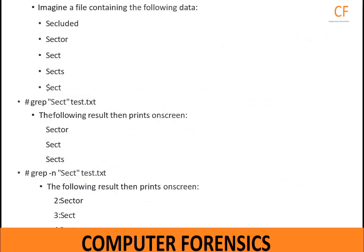Imagine a file containing the following data: sector, sect, sect, sects, isolation, etc. The following GREP expression searches each line for any word containing 'sect' in the file test.txt: grep sect test.txt. The following results then print on screen: sector, sect, sect, sects. To specify the line number when the match was made, you use the -n flag with the same command.